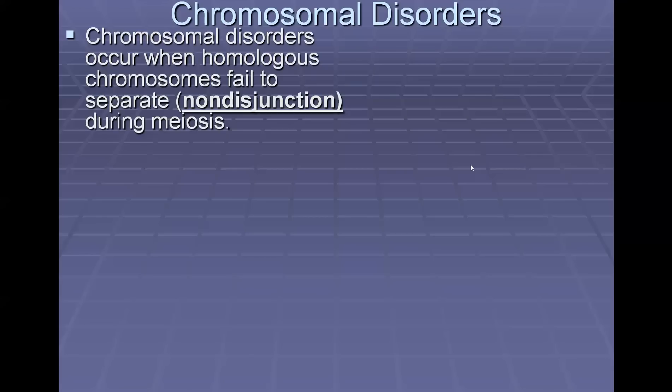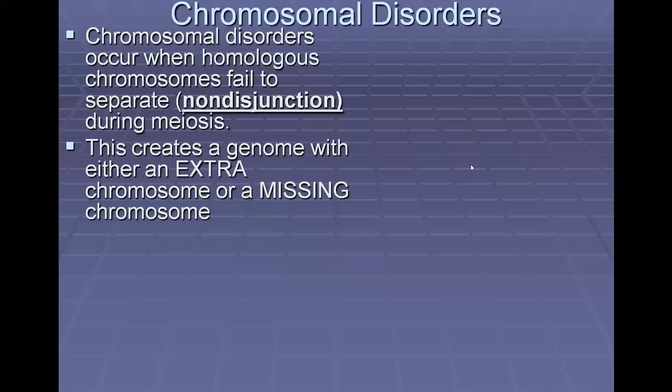Now let's look at chromosomal disorders. We've been talking about disorders that occur in just one gene, but chromosomal disorders are larger and have greater effects because they affect entire chromosomes. Chromosomal disorders occur when homologous chromosomes fail to separate — called non-disjunction — during meiosis. This creates a genome with either an extra chromosome or a missing chromosome.